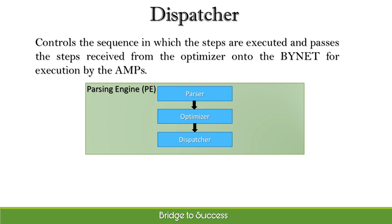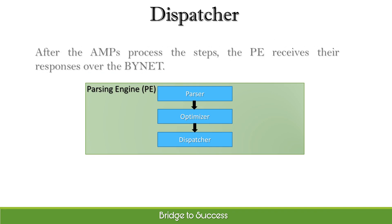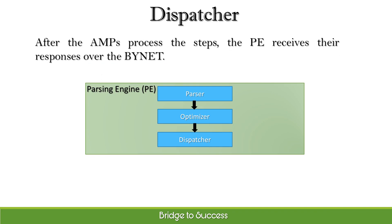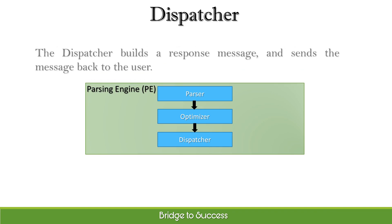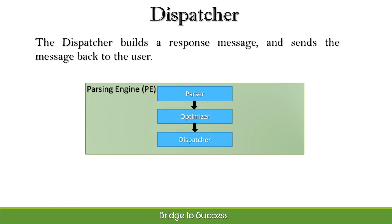The dispatcher controls the sequence in which the steps are executed, and passes the steps received from the optimizer onto the BYNET for execution by the AMPs. After the AMPs process the steps, the parsing engine receives their responses over the BYNET. The dispatcher then builds a response message and sends it back to the user.